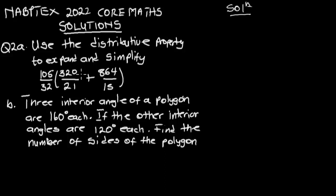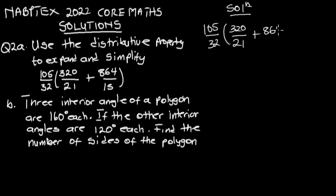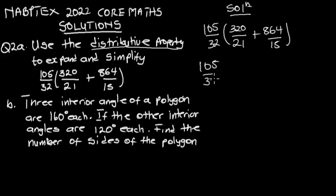So let's start with part A, where we use the distributive property to expand and simplify. We are given 105 over 32 multiplying the bracket 320 over 21 plus 864 over 15. The distributive property here is just expansion of this bracket, so we are going to have 105 over 32 times 320 over 21, plus 105 over 32 times 864 over 15.